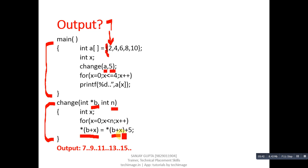Address is of integer type, so it will jump 2 bytes. On second location, value is 4, so 4 plus 5 equals 9. 9 will be assigned into b+x location. So 4 becomes 9. You can see the output: 7, 9, 11, 13, and 15.